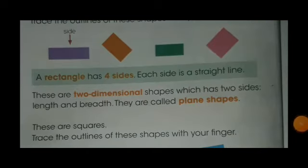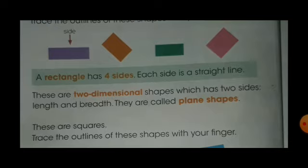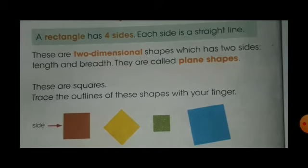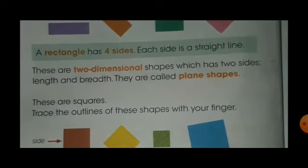On the next page, these are rectangles. Trace the outlines of these shapes with your finger. What is a rectangle? A rectangle has four sides. Each side is a straight line. These are two-dimensional shapes which have two dimensions — length and breadth. They are called plain shapes.